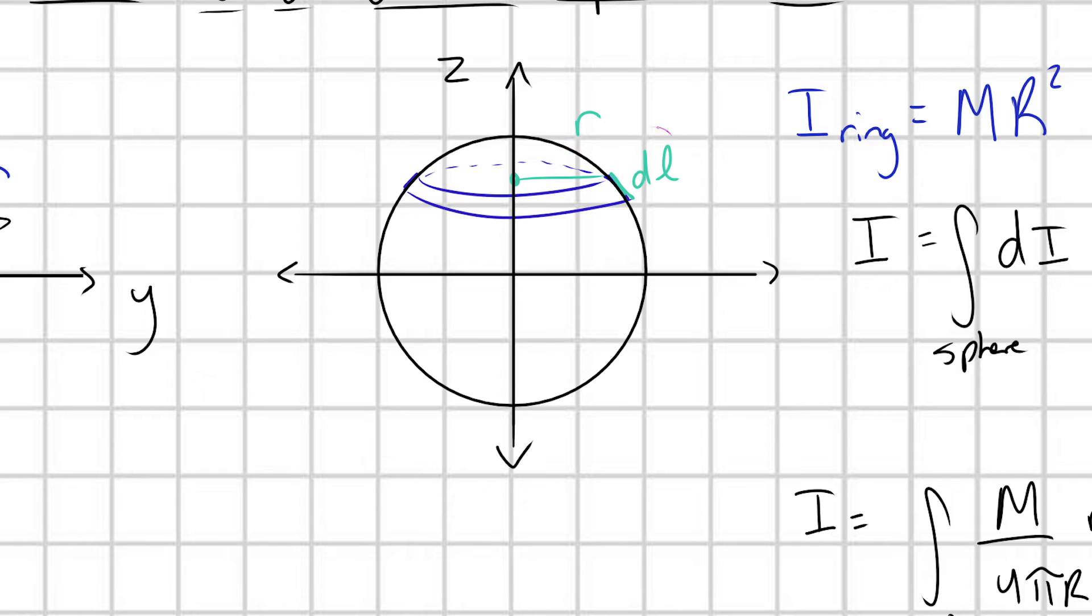So I want to rewrite r and dL in terms of some actual coordinates now. What coordinate system should we use? We should use spherical coordinates, because it's really easy to express dL when we're using spherical coordinates. In other words, what I'm saying is, look, this point here,